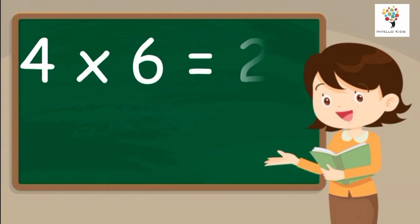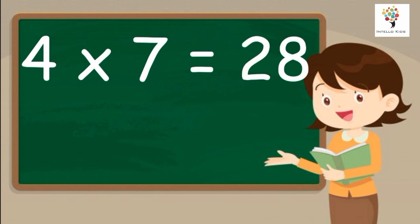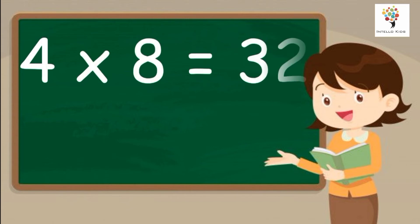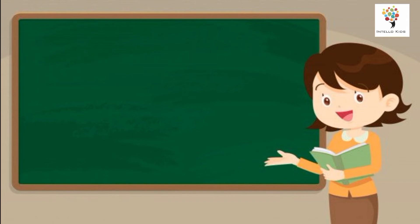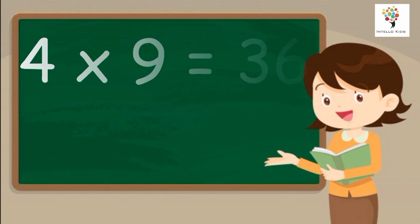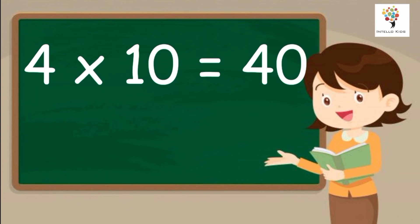Four sevens are twenty-eight. Four eights are thirty-two. Four nines are thirty-six. Four tens are forty.